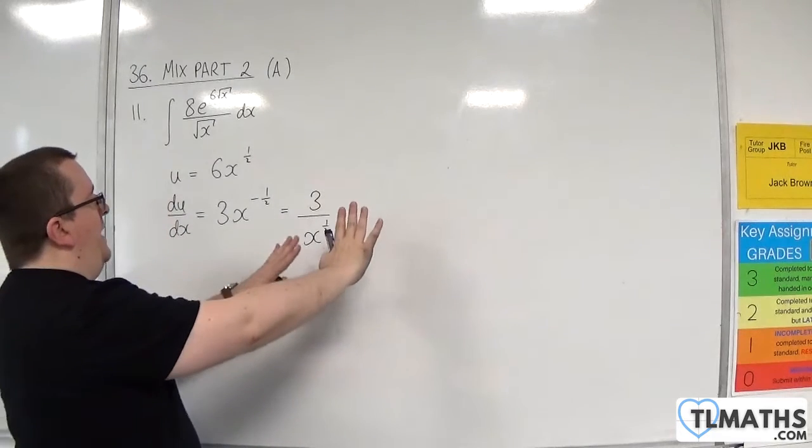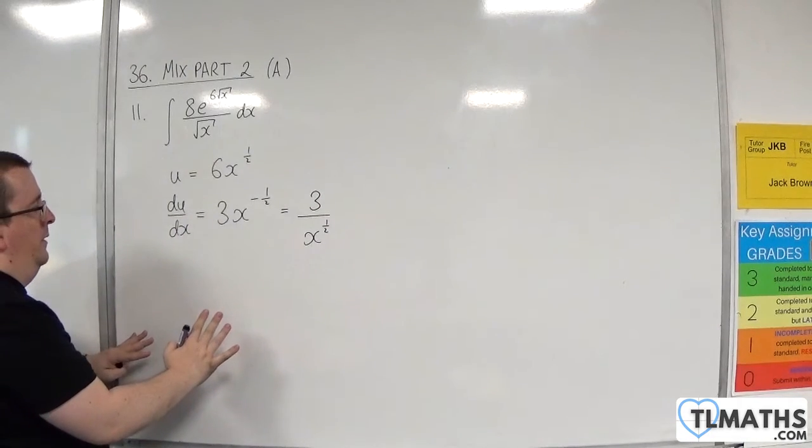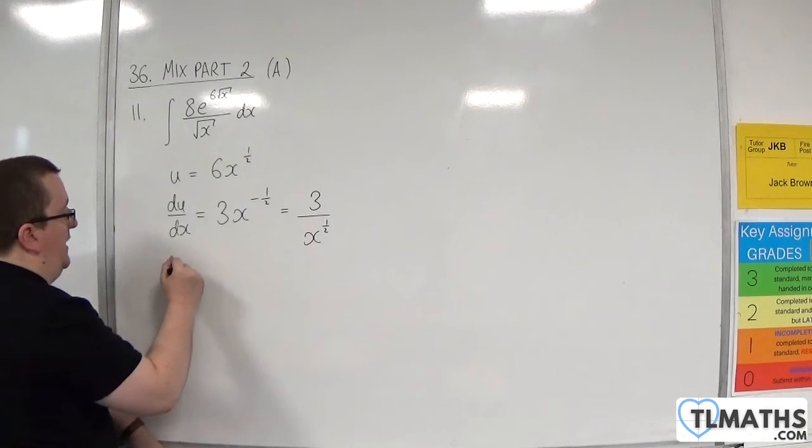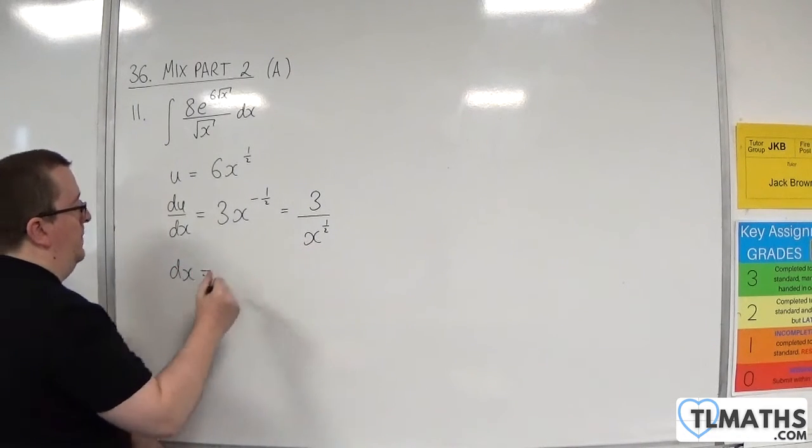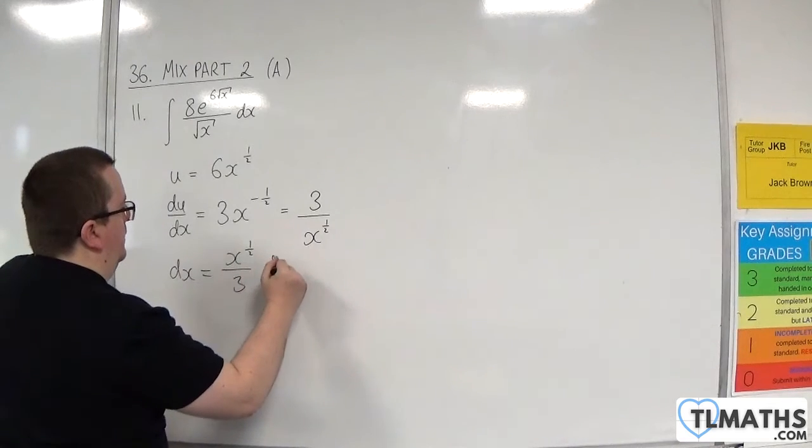Now, I'm going to multiply it by the dx, divide both sides by the 3 over root x. So we would get dx is equal to x to the half over 3 du.